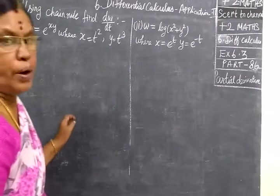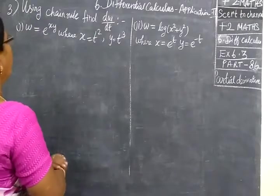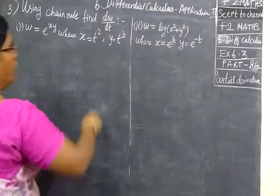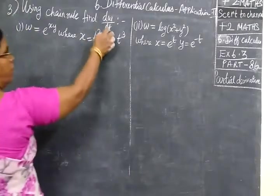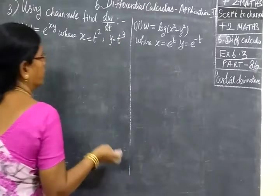Now, we see part 86 is chain rule. Using chain rule, find dw by dt.